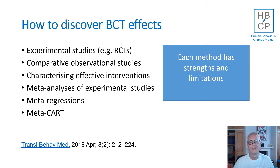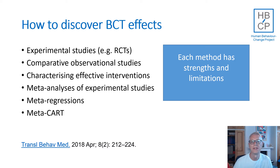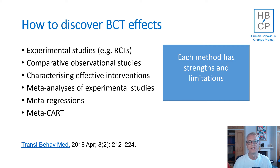When interventions contain multiple components, it can be very challenging to identify the effectiveness of each component or cluster of components. The BCT-TV1 taxonomy is an essential first step in this. Each component needs to be classified in a way that allows comparison across interventions and studies — if we're classifying a component in a given way in one intervention, we must classify similar components in the same way in others. Susan, Mickey and I identified six types of study that have been used to discover effects of BCTs and BCT clusters.